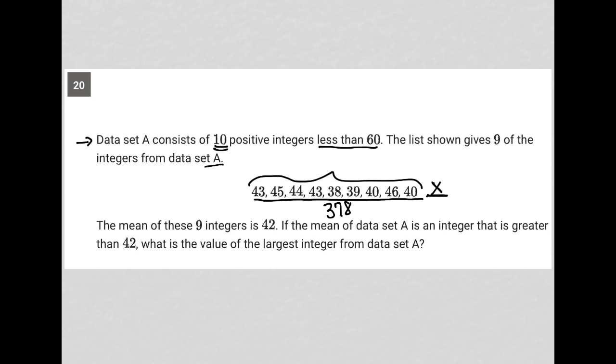So basically, if I translate the meaning of this first sentence here, it's saying that 378 divided by nine is equal to 42. Now, if the mean of data set A is an integer that is greater than 42...